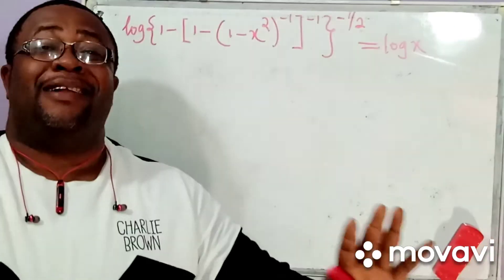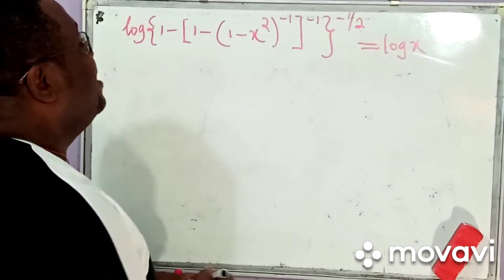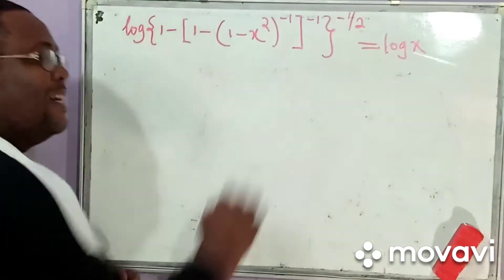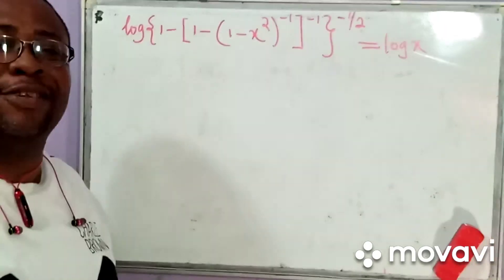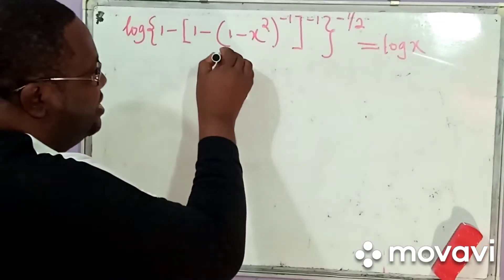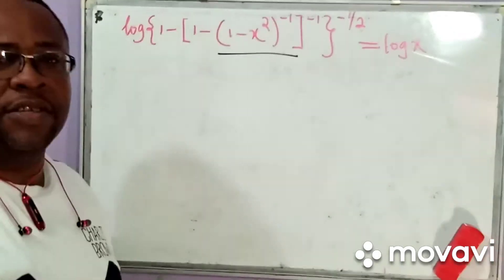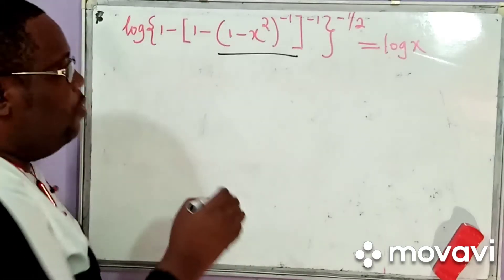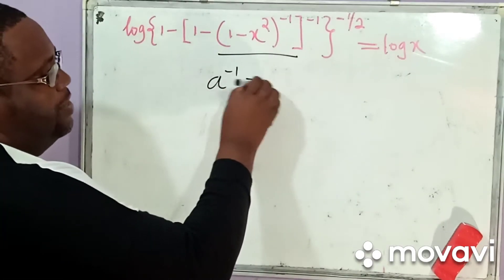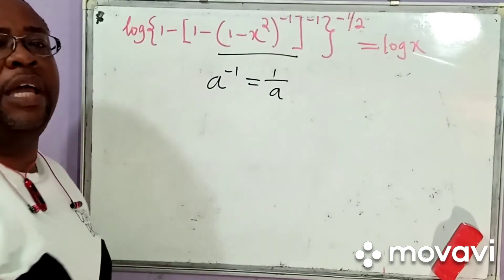Okay, welcome back. Now let us quickly begin. How do we do this? Now if we can simplify the rule of this to such an extent that it gives us log x, then that's the end of the problem. We come down to the very rudiments, the simplest unit of the problem — always remember that a to the minus 1 is equal to 1 over a.